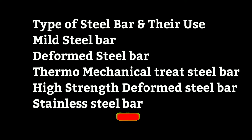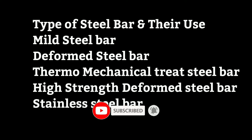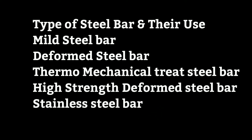The next type is Thermo Mechanical Treatment bars, or TMT bars. TMT bars are high strength deformed steel bars used in RCC work, manufactured with the help of advanced technology. Their features include better ductility, high yield strength and toughness, more bonding strength, earthquake resistance, high thermal resistance, and they are economical and safe in use.